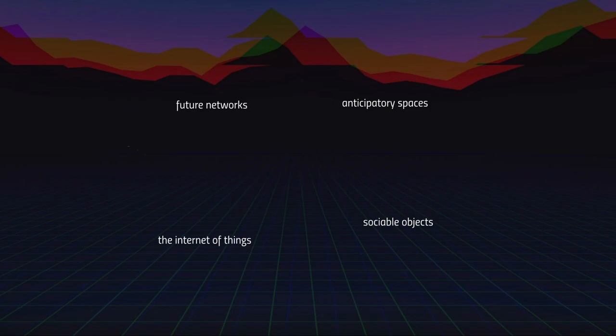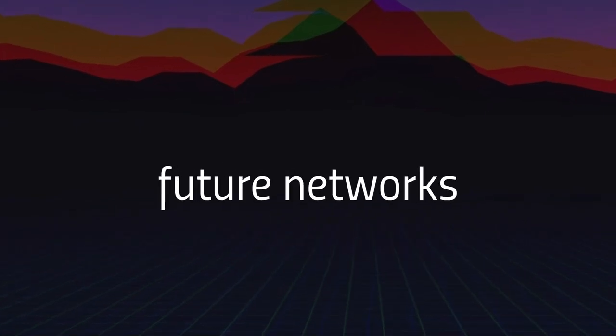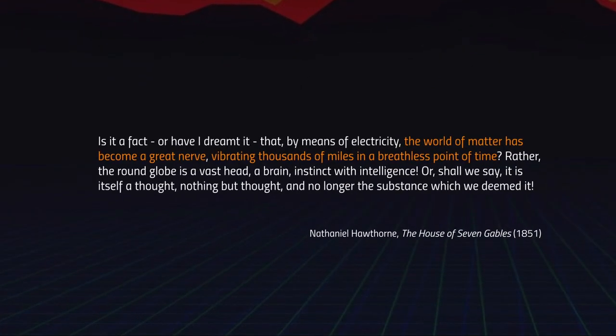Let's begin by retracing our steps a little and trying to link the Internet of Things to all these other phenomena we've already discussed in this cycle of lectures. As an opener, I'm going back to the very beginning — to the first lecture in which we talked about the telegraph. Here we have Nathaniel Hawthorne in The House of the Seven Gables exclaiming to one of his characters: 'The world of matter has become a great nerve.'